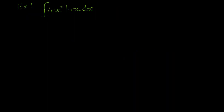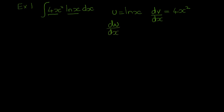In example one, we've got a product of two functions: the first function is 4x² and the other is ln(x). As just mentioned, if ln(x) is one of the functions, we take it as our u. So u = ln(x), which makes our dv/dx equal to 4x². We find du/dx — which is straightforward — giving us 1/x. Then we integrate the other side to find v, which gives us 4x³/3.